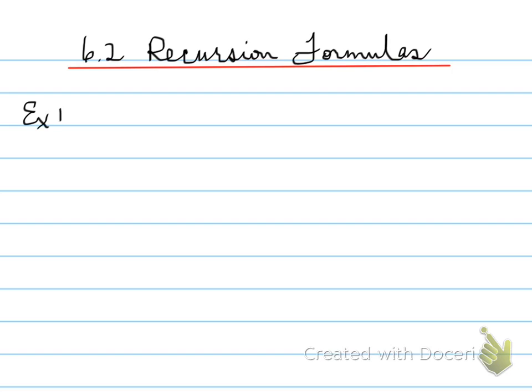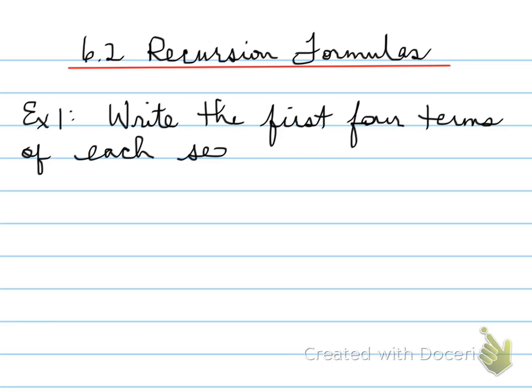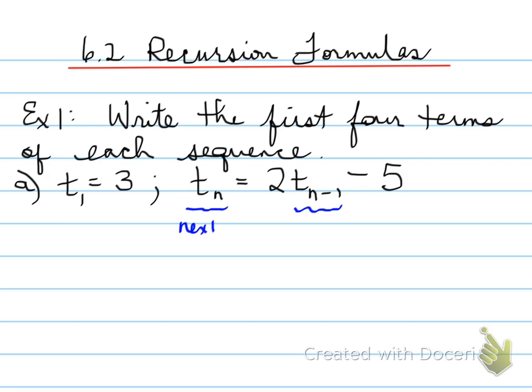In example number one, we're asked to write the first four terms of each sequence. Our sequence is T1 equals 3 and Tn equals 2 times T(n-1) minus 5. In this case, what we have to do is find T1, and to find the next term, we use the previous term manipulated to find the next value.